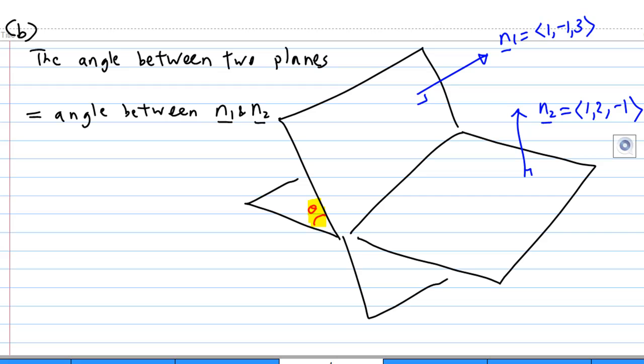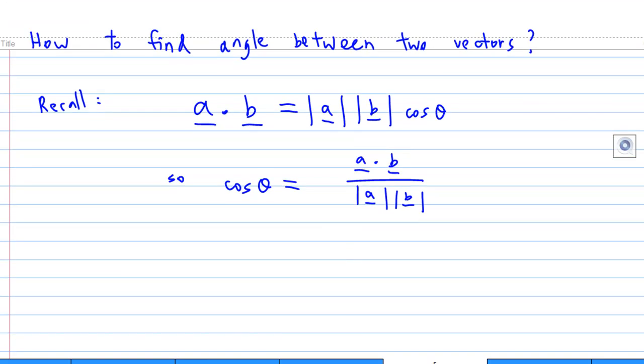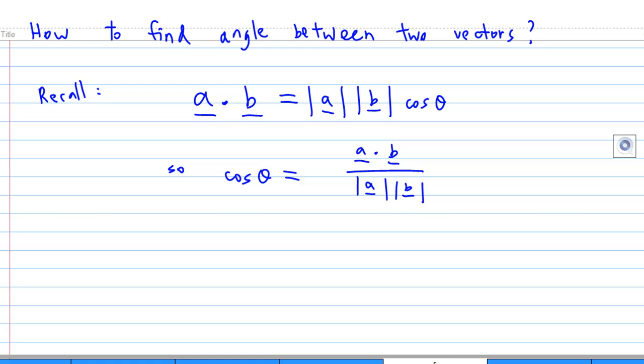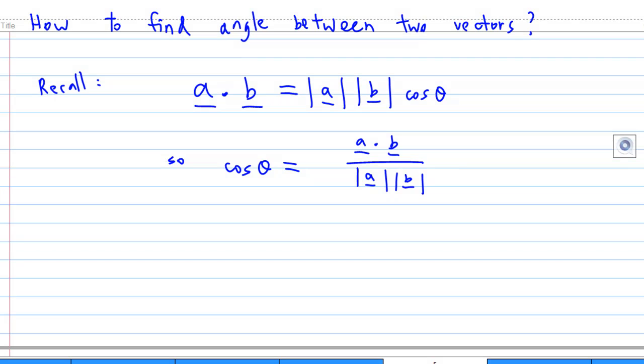How to find the angle between n1 and n2? We can use the dot product. Recall that the dot product between a and b, a dot b, equals the length of a times the length of b times cosine theta. So cosine theta equals a dot b over the length of a times the length of b.